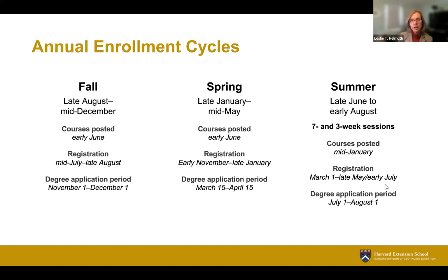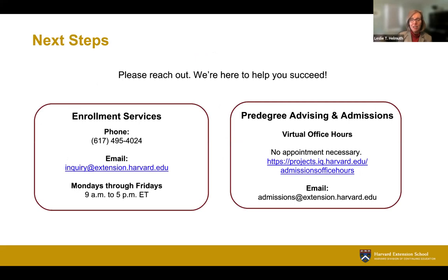For contact information: enrollment services is your first stop — they know a lot about how to get started, prerequisites, and enrollment requirements. If you have admissions-specific questions, the predegree advising office offers virtual office hours on a regular basis, and is also accessible via email at admissions@extension.harvard.edu. All of the people on these teams are eager to talk to you and answer questions, so please don't hesitate to reach out. We're here to support you in your decision.